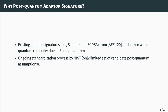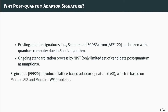After the motivation and introduction of adapter signatures, why do we need post-quantum adapter signatures? One reason is that existing adapter signatures constructed by Almeyer et al. are broken by a quantum computer due to Shor's algorithm, which runs in quantum polynomial time. Furthermore, there is an ongoing NIST standardization process for post-quantum secure encryption and digital signature schemes. If blockchains are there to stay in the long run, they need post-quantum security as well. Very recently, Esgin et al. constructed a lattice-based adapter signature scheme called LIS, based on module SIS and module LWE problems, though their construction has several drawbacks.